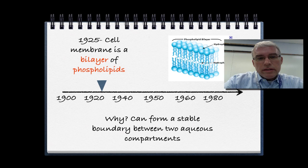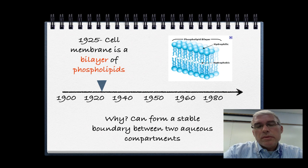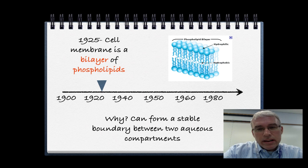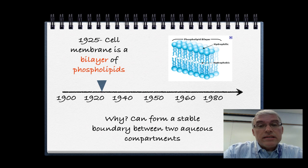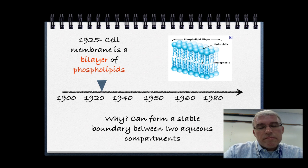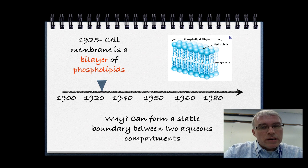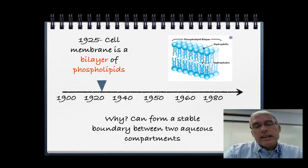Around 1925, scientists figured out that cell membranes are actually built from a bilayer of phospholipids. Phospholipids have a dual nature: a hydrophilic head end with a phosphate group and hydrophobic tails made of fatty acids. They arrange themselves so that their hydrophilic phosphate ends always face toward the water. Scientists in 1925 realized that a bilayer is the only stable boundary you can have between two aqueous compartments, separating the cytoplasm from the environment while allowing hydrophilic ends to bond with water on both sides.